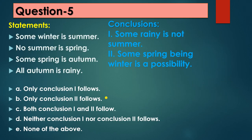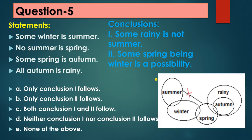Question 5: Statements — some winter is summer, no summer is spring, some spring is autumn, all autumn is rainy. In the Venn diagram, winter and summer overlap showing some winter is summer; spring has a cross symbol with summer showing no summer is spring; autumn overlaps with spring; and autumn is inside the rainy block showing all autumn is rainy.